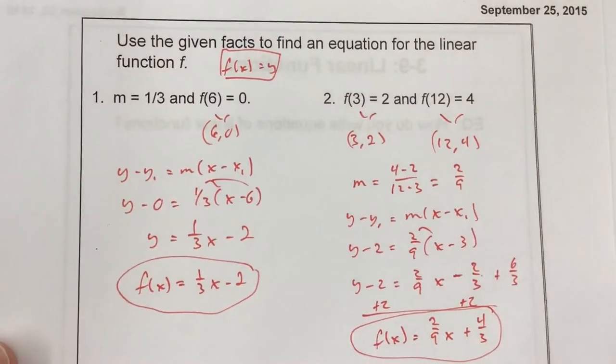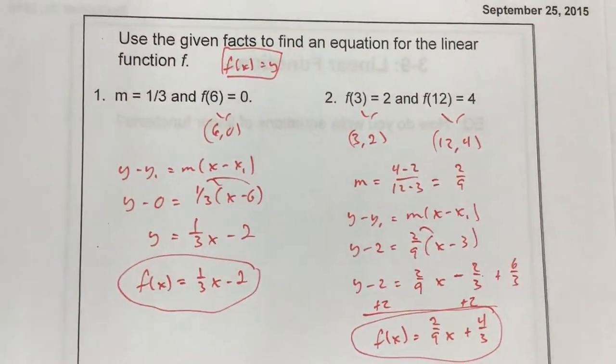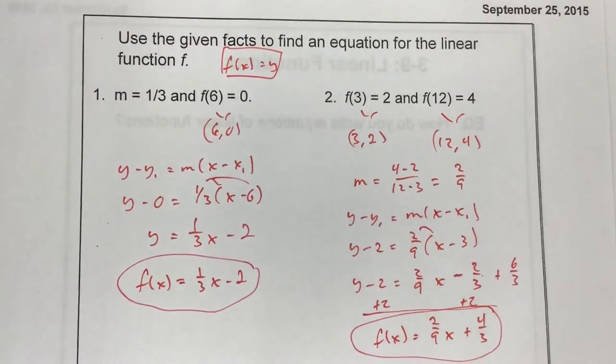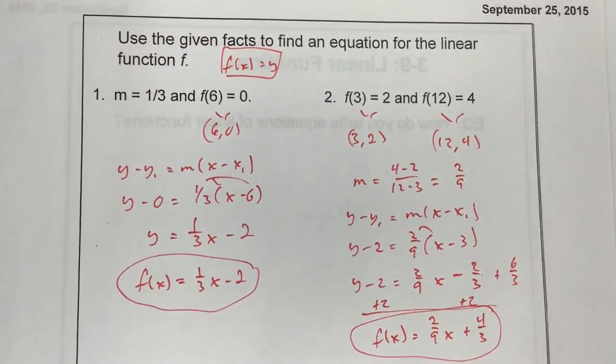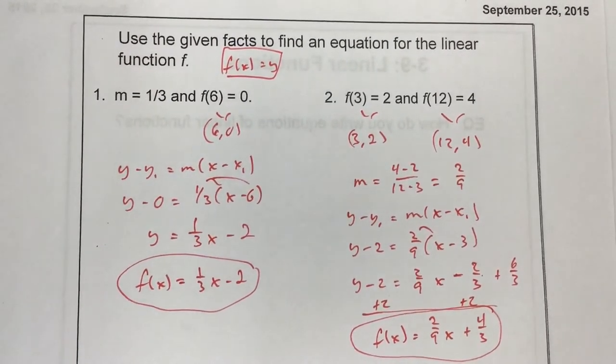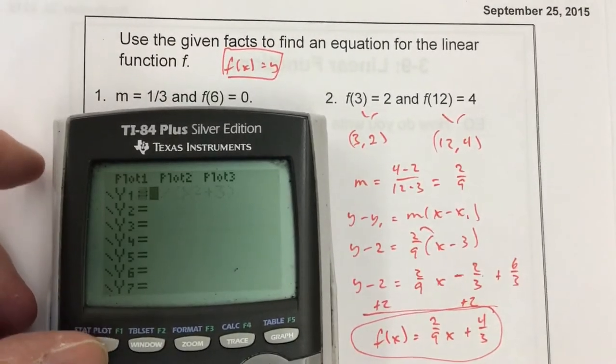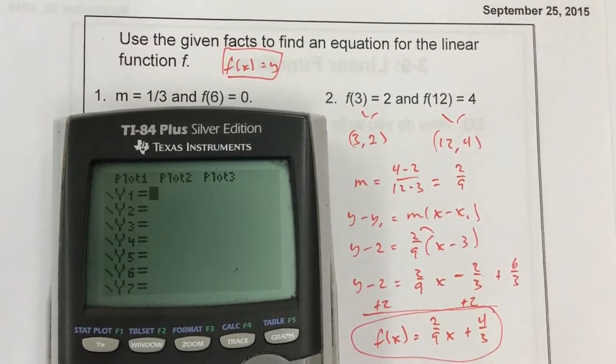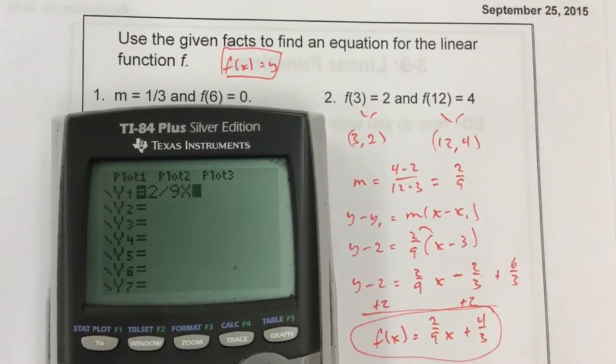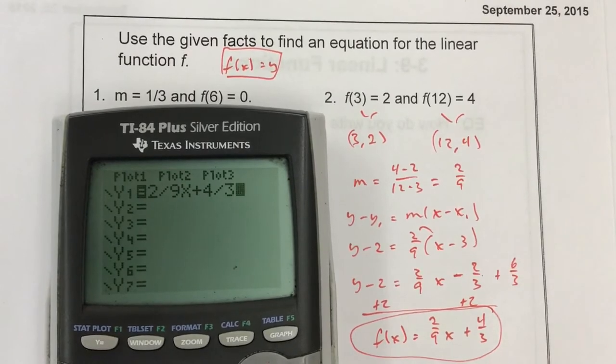And again, I would even check this on a calculator. If you put your function in your calculator into the y equals. So I'll put in 2 divided by 9x plus 4/3, which is 4 divided by 3. I'm going to go to my table.